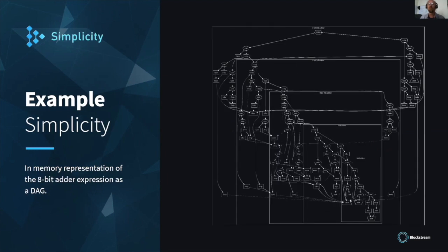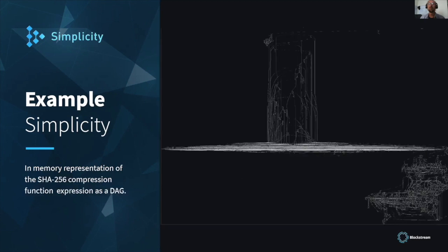Here's an 8-bit adder. You can see that there's kind of logarithmically nested reuse of a 2-bit adder, a 4-bit adder, etc., recursively. And the next example is a SHA-256 compression function — it's a bit small so you can't read it, but it implements everything from this very logic bit-level layer up to a SHA-256 compression function.